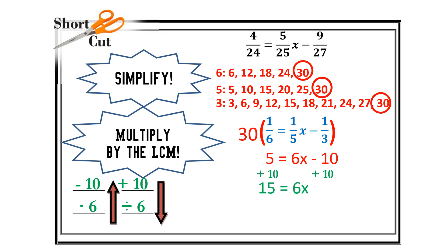I'm going to add 10 to both sides, giving me 15 equals 6x. Then I divide both sides by 6. This is where you go back into fraction mode — 15 divided by 6, I'm looking for a fraction, not a decimal. After simplifying, my final answer is x equals 2 and a half. This shortcut is not required, but for people who really dislike fractions, it's a way to get around them — though it still requires fraction skills such as finding a lowest common multiple and simplifying fractions.